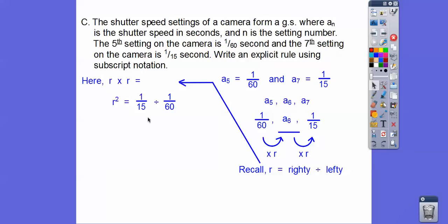Remember when we divide fractions, we invert the second one. So we're going to change it to times 60 over 1, and 15 goes into 15, and 15 goes into 60 four times. So we get r squared equals 4, so r has to be 2.